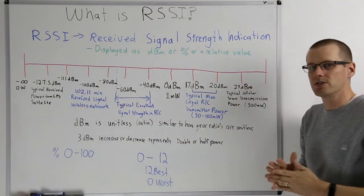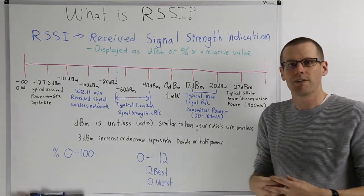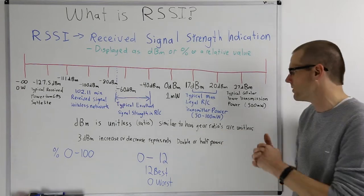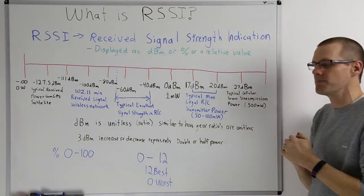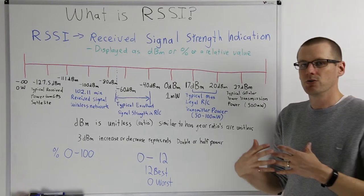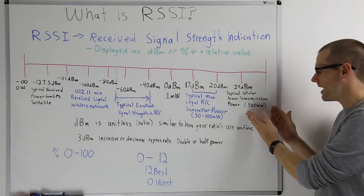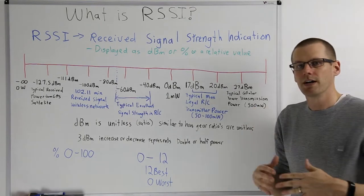So on the far right, we're going to be talking about power transmission from a signal strength point of view. 27 dBm is a relatively large dBm value. At 27 dBm, this would be the typical cellular power transmission that you would see for your cellular network, and that is going to be a 500 milliwatt value.